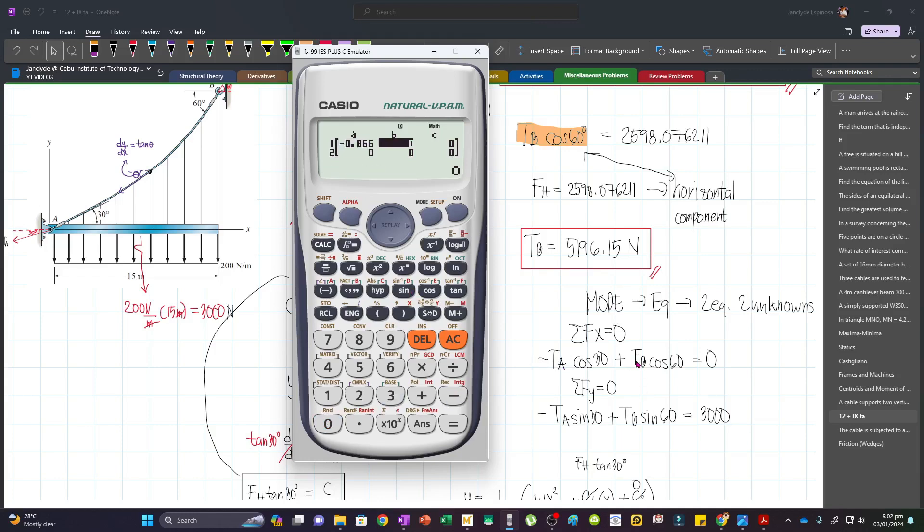And then the coefficient of TB is cosine 60. We will type that one here. That's equal to zero, so we won't change this one. And then for the summation of forces vertical, we have TA, which has a coefficient of negative sine 30.